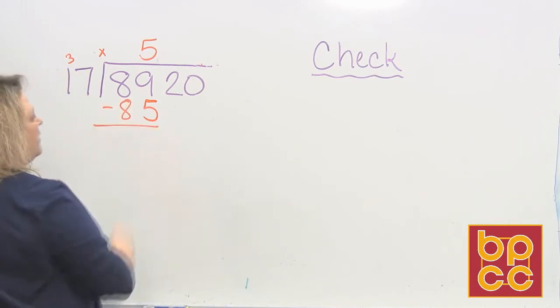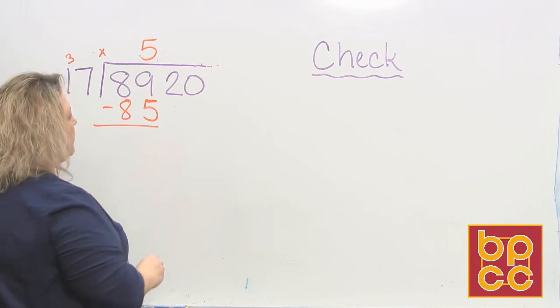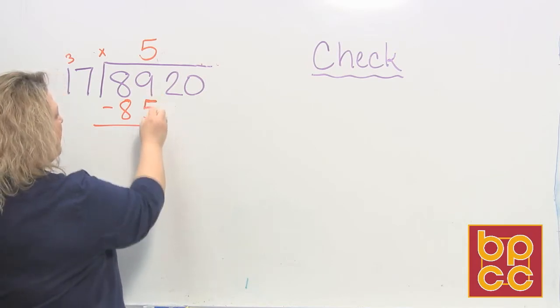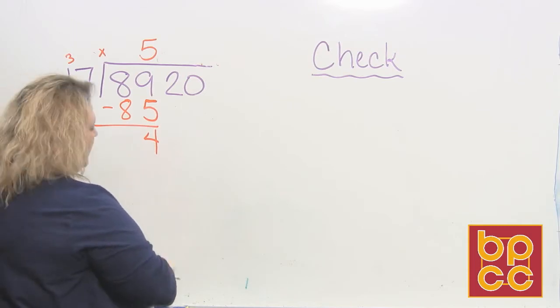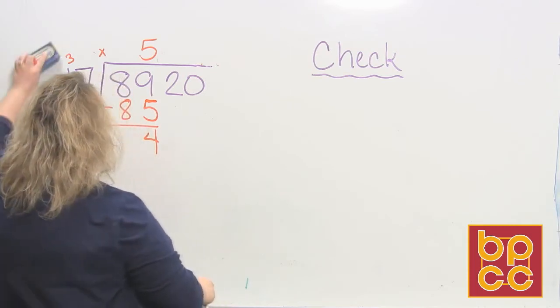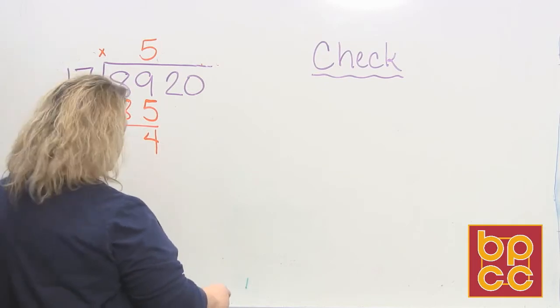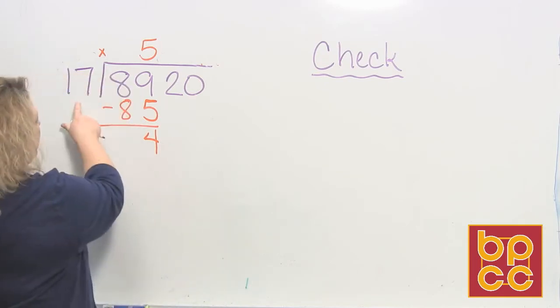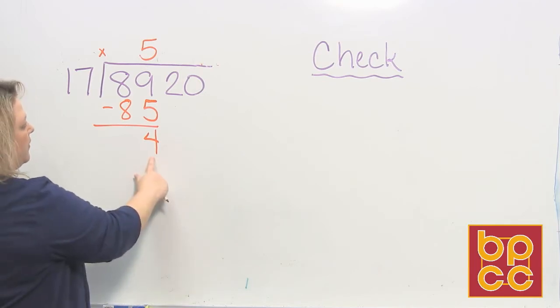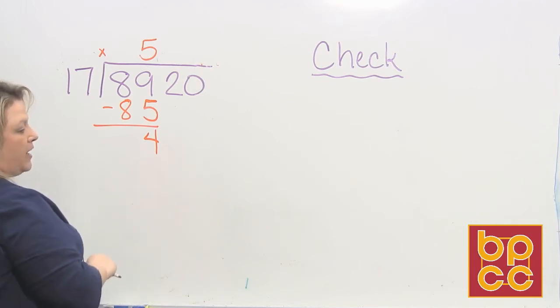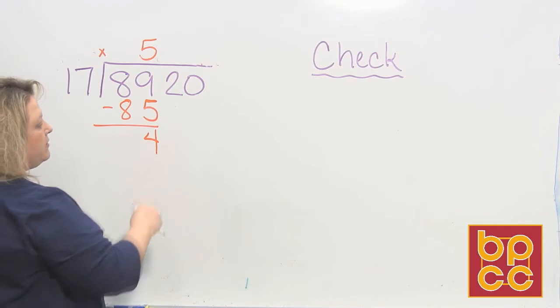And serve means subtract, so we're going to subtract these from each other. 9 minus 5 is 4. 8 minus 8 is 0, so I don't need that. And then we ask ourselves, we go on, we compare, there's the cheese part of it, and when we compare we say, is 17, which is my divisor, bigger than the remainder that I got, which is 4, and yes it is, so I'm good to go.